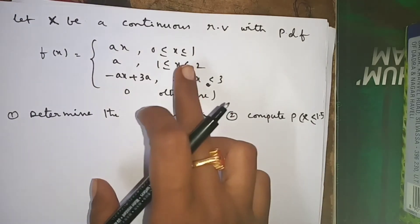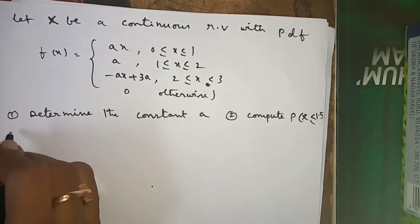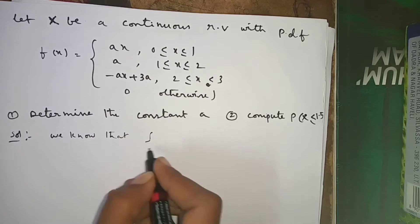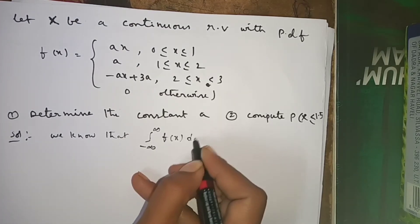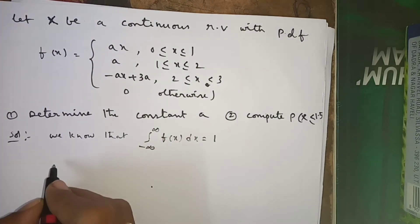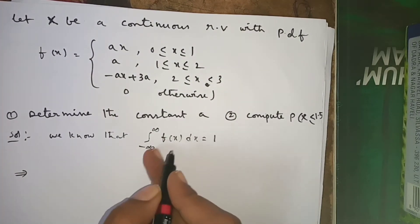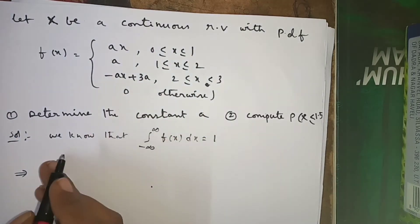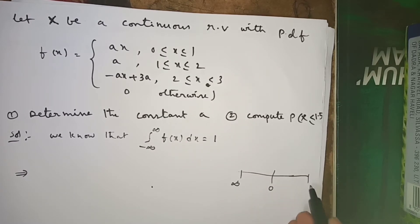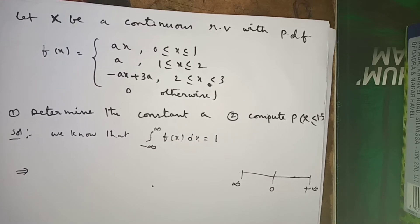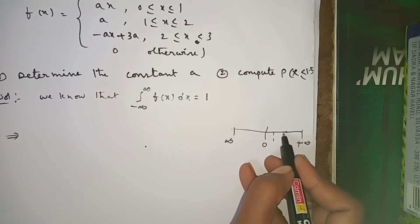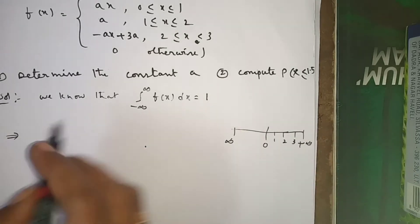We know the formula: the integral from minus infinity to plus infinity of f(x) dx is equal to 1. Our values lie between 0 and 3 on the number line. So between minus infinity and plus infinity, we have points 0, 1, 2, and 3 marked.